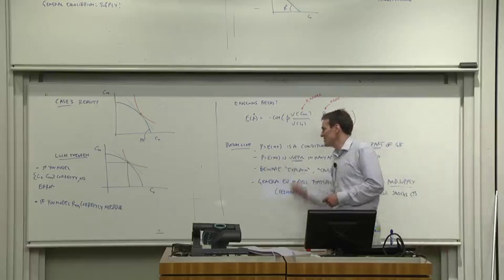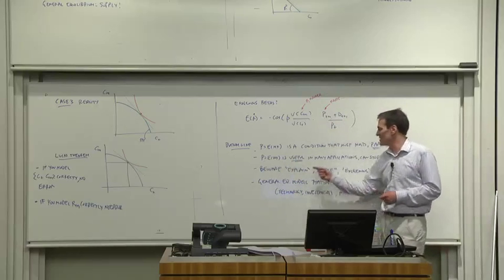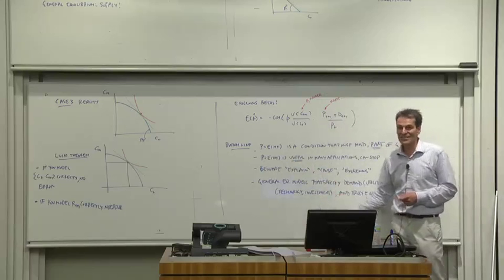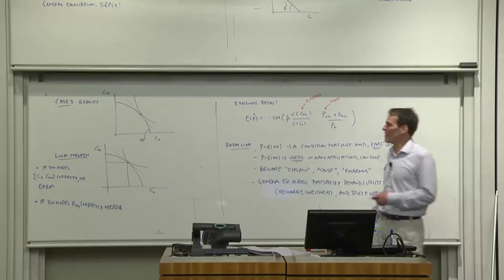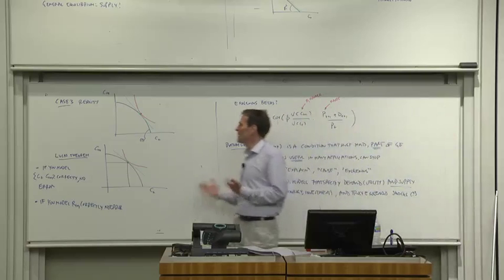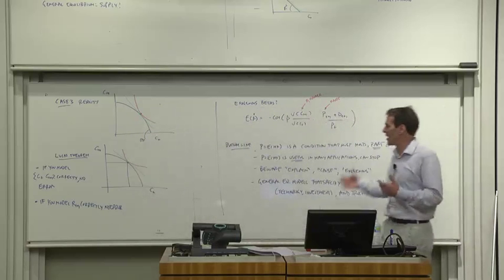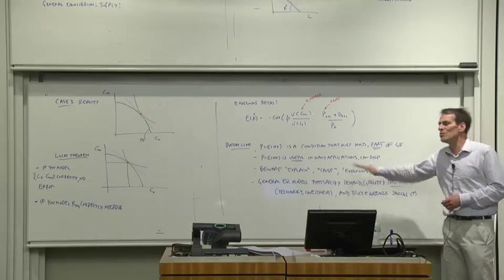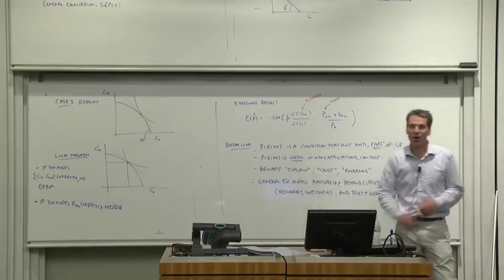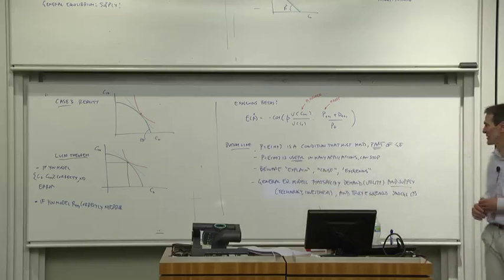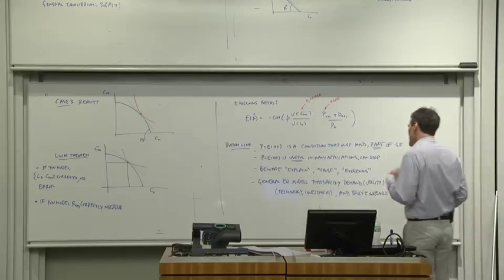But beware in doing so about using words like explain, cause, endogenous. Beware about making general equilibrium statements of what would happen if technology changed out of a model that doesn't get the right general equilibrium. People use those words, especially the explain, all the time. And they're usually using them wrong.